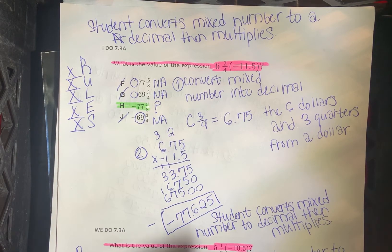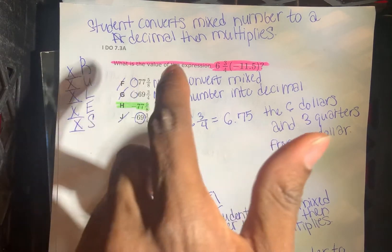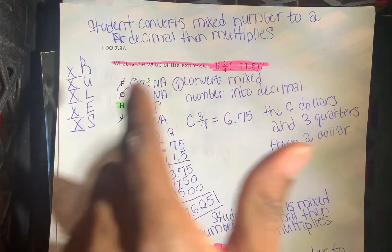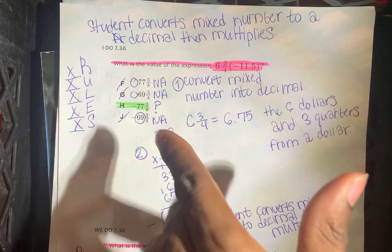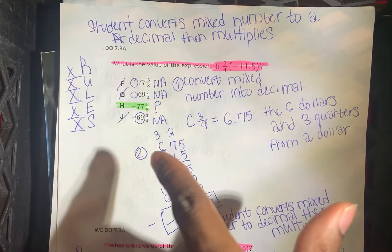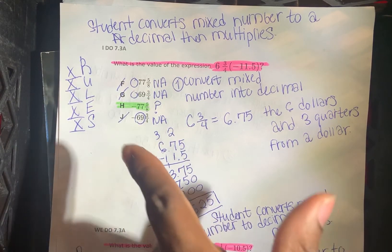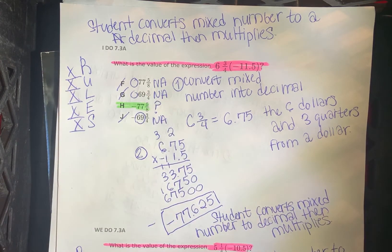So I read the word problem, underlined or highlighted the specific question, labeled the incorrect answers, eliminated the incorrect answers, did my multiplication process, evaluated, and then selected the correct answer, which is H.